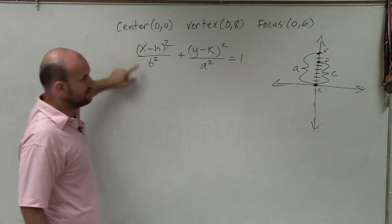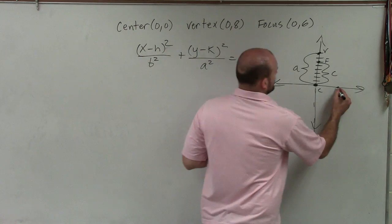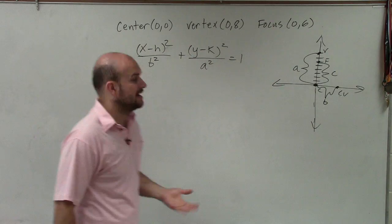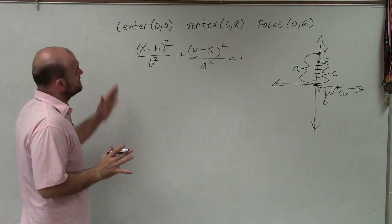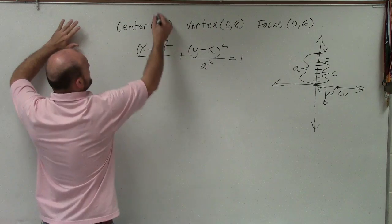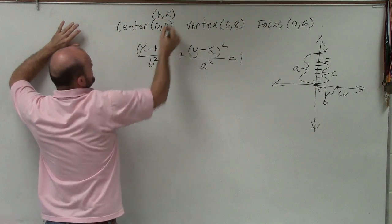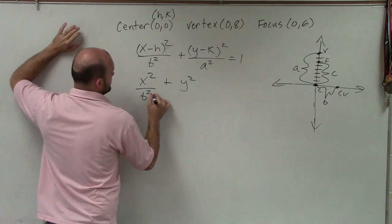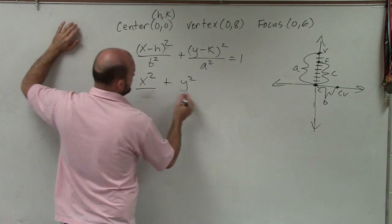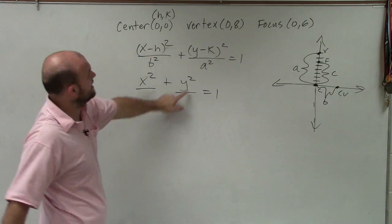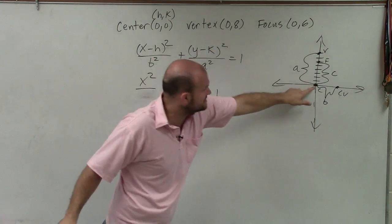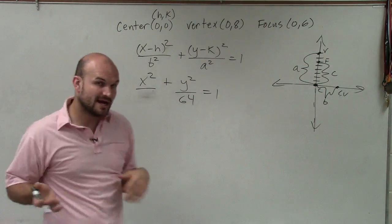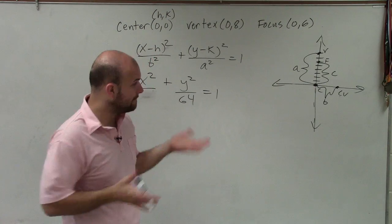The problem is we don't know what b² is. And b represents the distance to your co-vertices. So we're going to have to figure that out. But before we get to that, let's look at the center. Now, remember the center we represent as (h,k). So since that's (0,0), I can say x² plus y². Actually, we do know what a² is. The distance from the center to your vertices is 8, right? So 8² is going to be 64. Now what we need to do is figure out what b is.